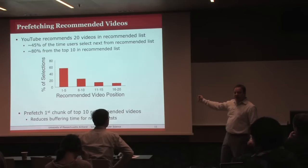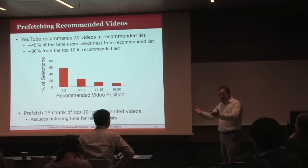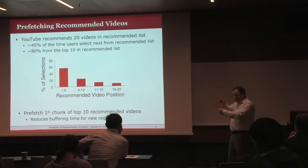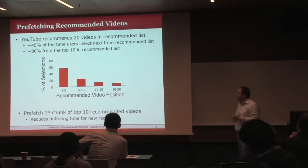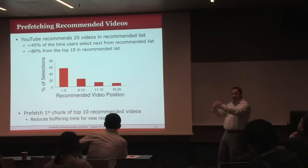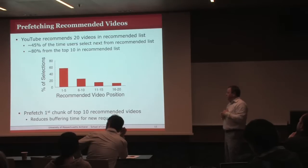At MMSYS 2011 we did work on prefetching videos from the related list and showed how that improves the hit rate. As was shown before, you have a related list, so you get the first segments of all the videos listed there because users are very likely to choose from that related list, as shown in our traces. So we not only cache based on requests, but also proactively get the prefixes from related list videos, to reduce buffering time.